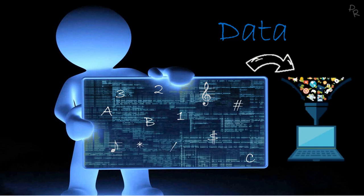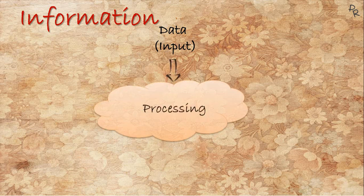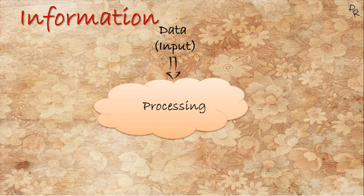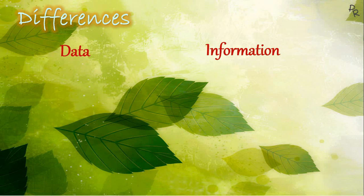Whereas information is the processed data — that is, certain operations are performed on the data so that it becomes meaningful. The output which we get from the computer after processing the given input is known as information.